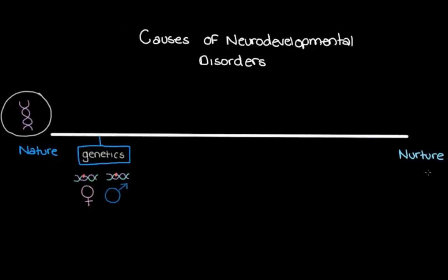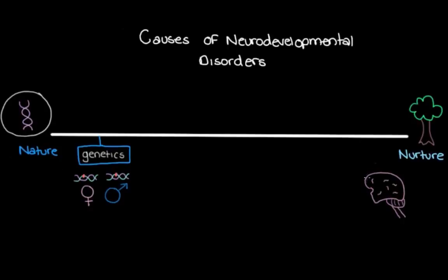On the other end of our spectrum, when we say nurture, we're talking about our environment — all of our personal experiences that happen after we're born. For example, I recently had an infection called meningitis, which is when our meninges, the protective membranes covering our brain and spinal cord, become infected. I developed this from my environment, not from something I was born with. We can put infections, including meningitis, on the nurture end of our spectrum.